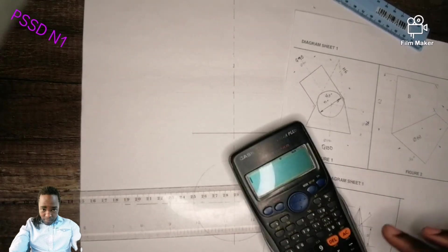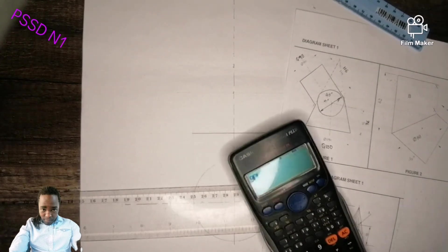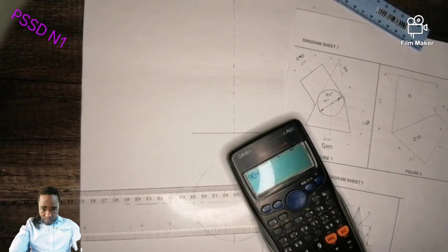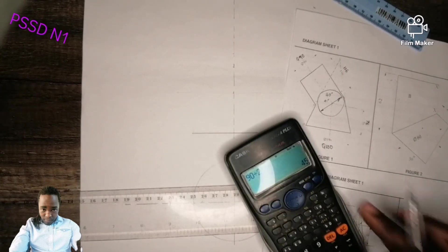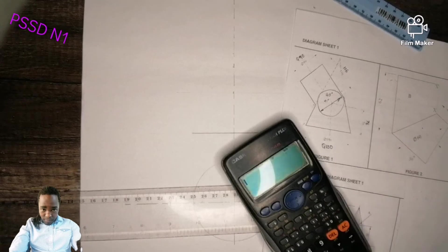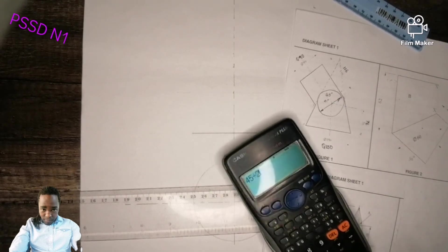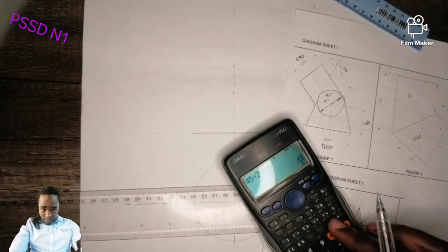And then 45 divided by 2. Why? Because we are looking for a radius. So how much are you getting? You're getting 22.5.